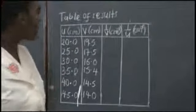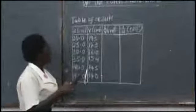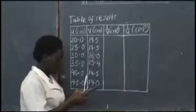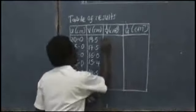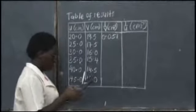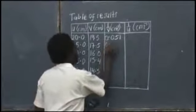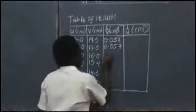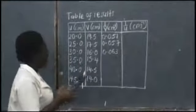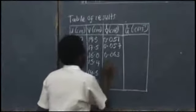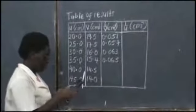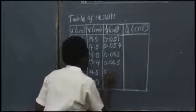We record results in a table including values of 1/V and 1/U. For V = 19.5 cm, 1/V = 0.051. For V = 17.5 cm, 1/V = 0.057. For V = 16 cm, 1/V = 0.063. For V = 15.4 cm, 1/V = 0.065. For 1/U: 1/20 = 0.050, 1/25 = 0.040, 1/30 = 0.033, 1/35 = 0.029, 1/40 = 0.025, and 1/45 = 0.022.